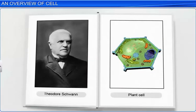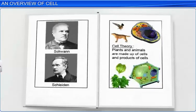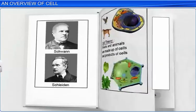Schleiden and Schwan together formulated the cell theory, which stated that both plants and animals are made up of cells and their products such as proteins and lipids. However, the cell theory did not explain the formation of new cells, which was clarified by Rudolf Virchow in 1855.